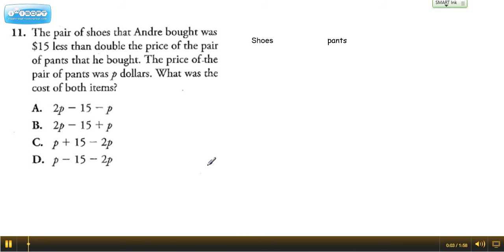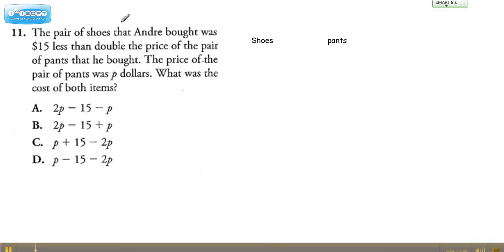Hey, everybody. Ms. Dietrich here. Question number 11 reads: The pair of shoes that Andre bought was $15 less than double the price of the pair of pants that he bought. The price of the pair of pants was P dollars. What was the price of both items?